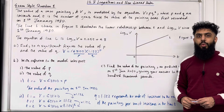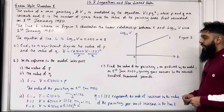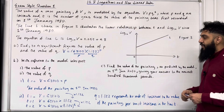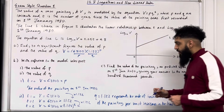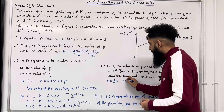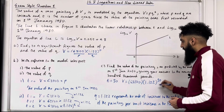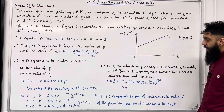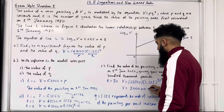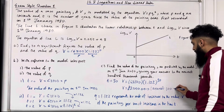Part C: find the value of the painting as predicted by the model on 1st January 2010, to the nearest £100,000. Going from 1st January 1980 to 1st January 2010 is 30 years, so we substitute t equals 30. v equals 63,100 multiplied by 1.122 to the power 30. Putting this into the calculator and rounding to the nearest £100,000 gives £2,000,000.